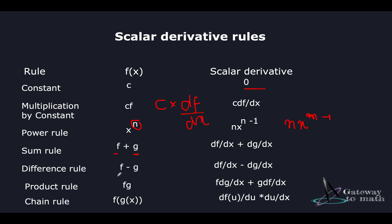Similarly with the difference rule, we differentiate functions independently and place the negative sign in the middle. The product rule is an interesting case: we take the first function as a constant and differentiate the second, then add a plus sign and differentiate the first function treating the second as a constant. So we take f as a constant and differentiate g with respect to x, then add a plus sign, take g as a constant, and differentiate f with respect to x.